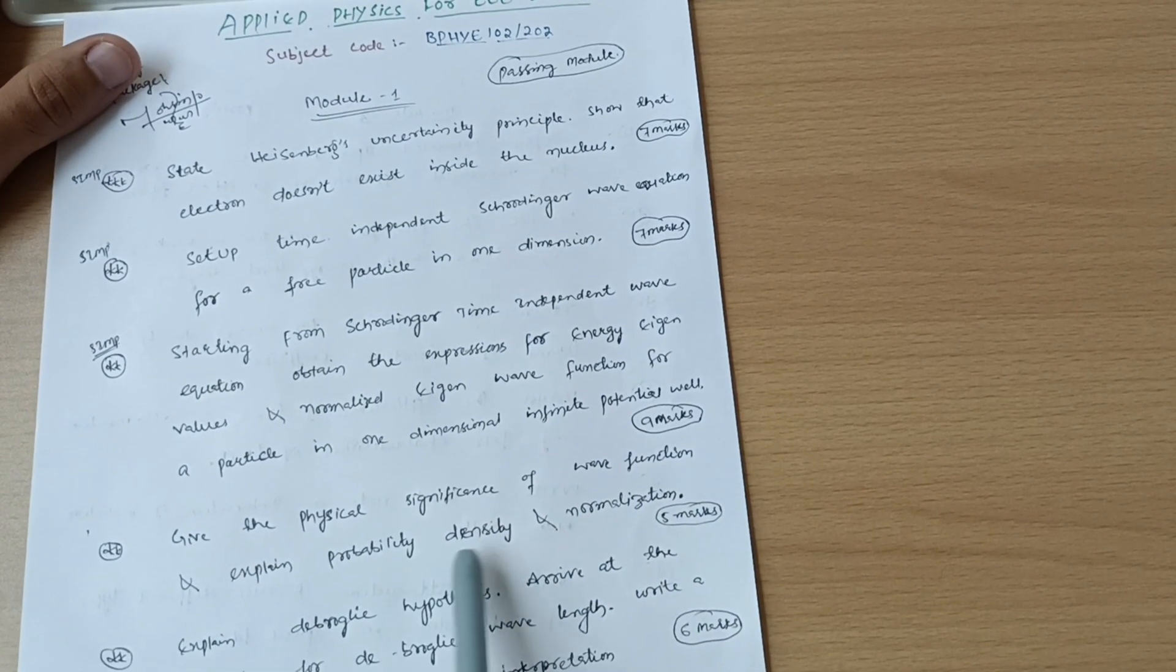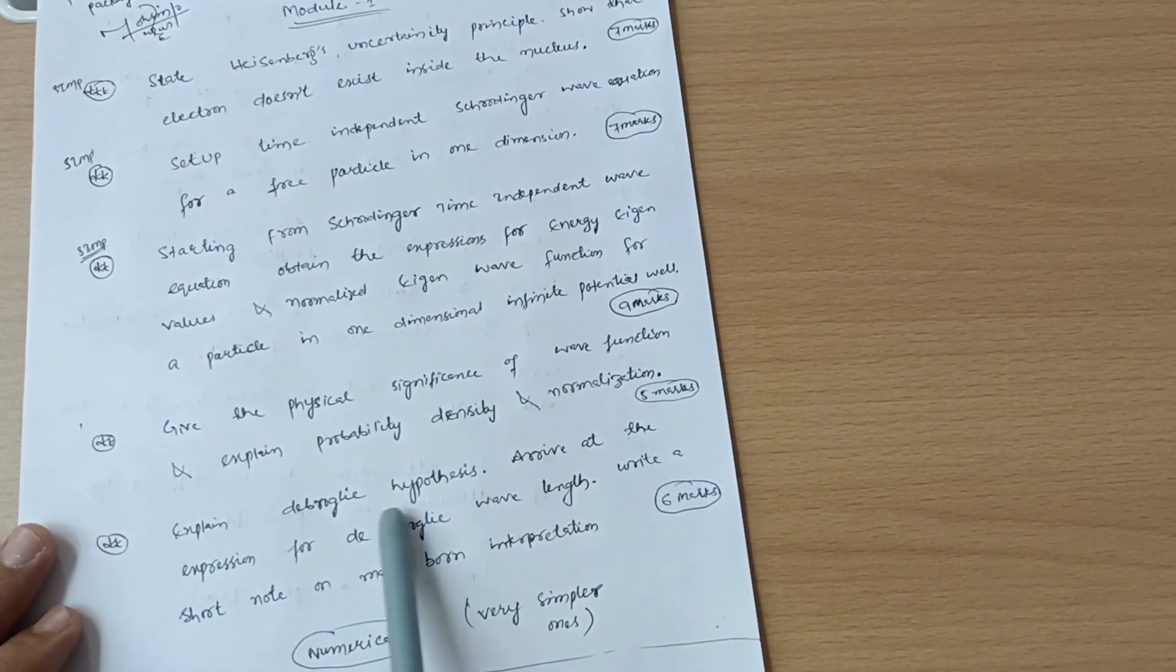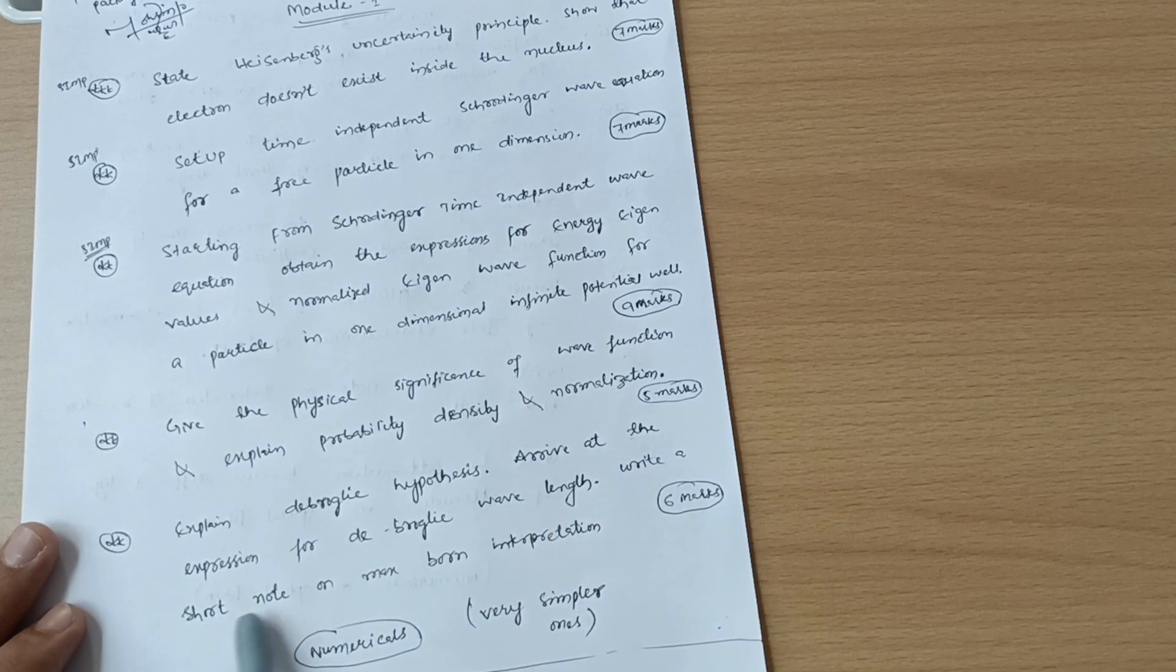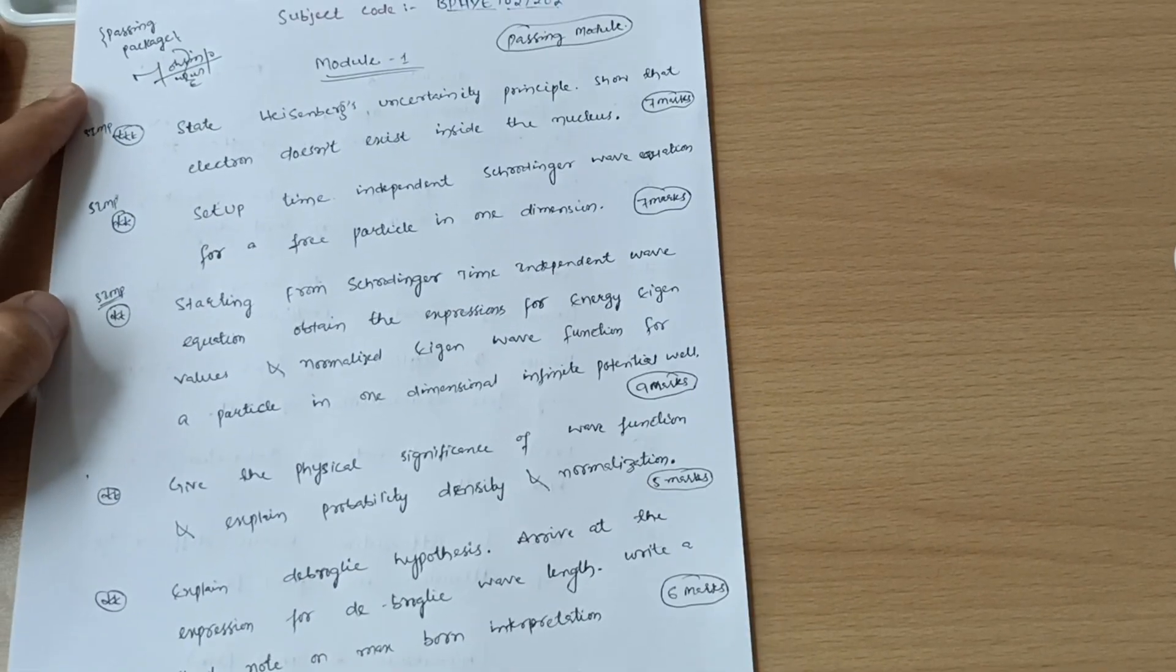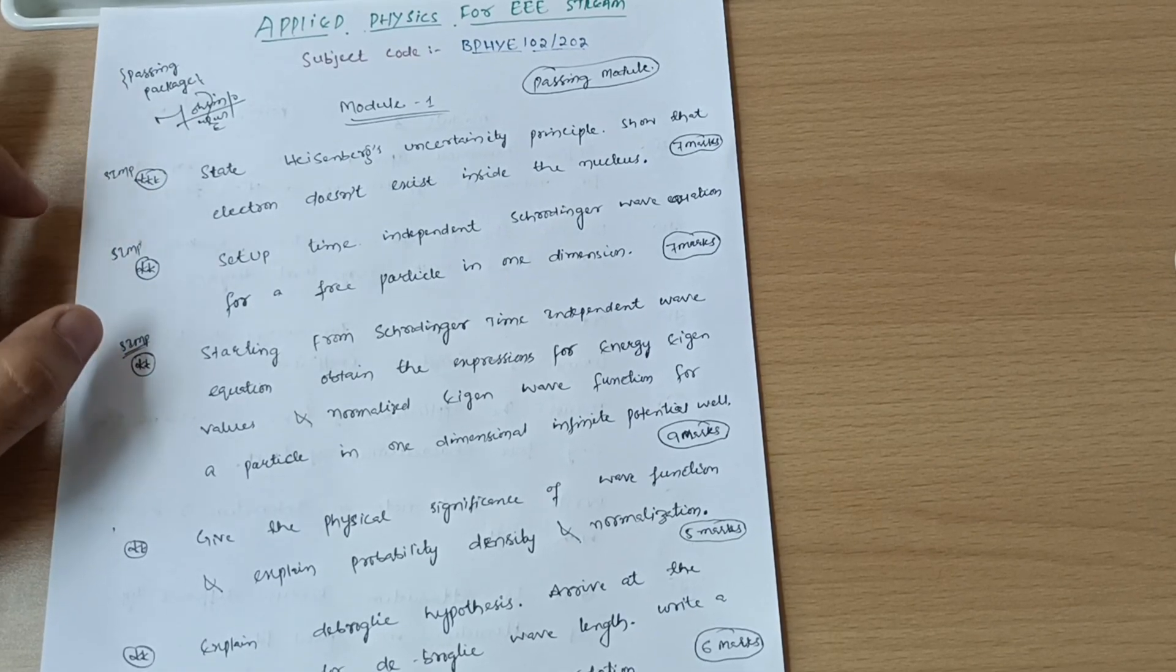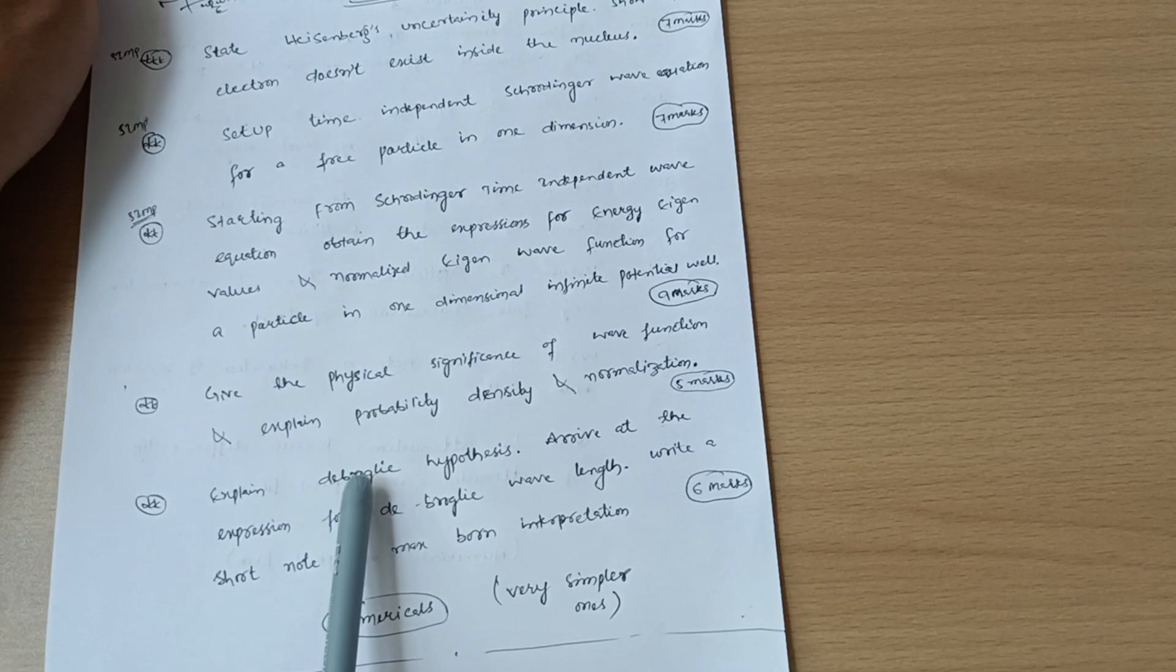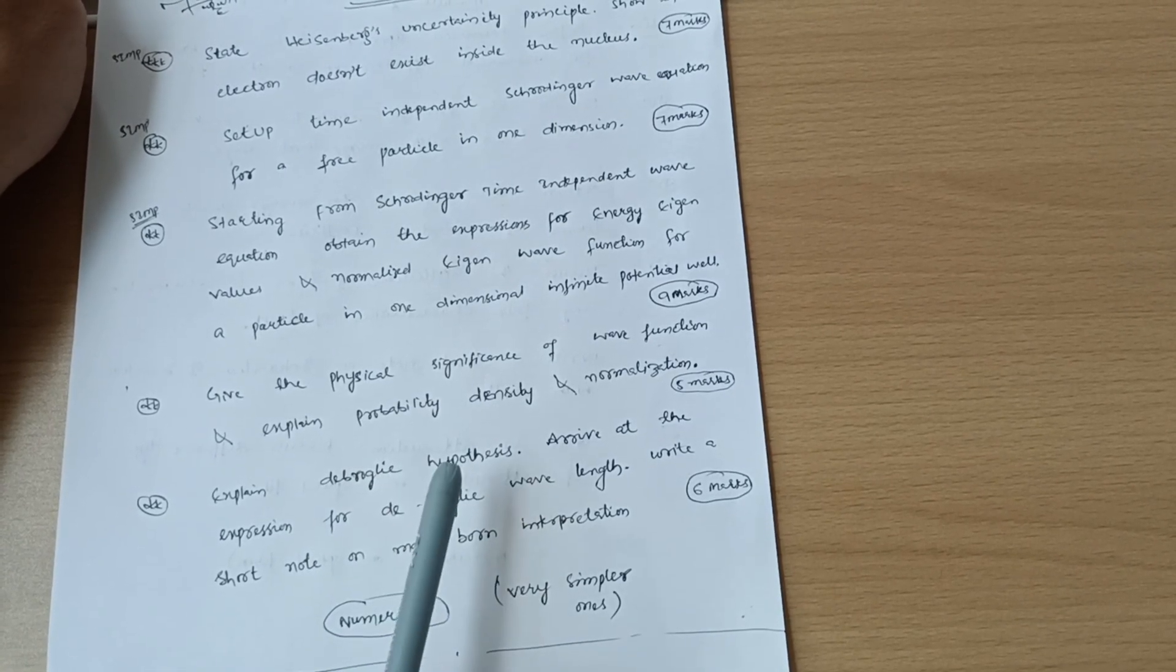Then give the physical significance of wave function and explain probability density and normalization. Next is explain de Broglie hypothesis, arrive at the expression for de Broglie wavelength, write a short note on Max Born interpretation. This may be a six marks question. These are the five questions which you have to go through in module first. You can easily score 15 marks by this much portion, but I am telling you dear friends go through the numerical parts of module first also. Those are very simpler ones and if I will get time so I will definitely solve those numericals in one of my videos.